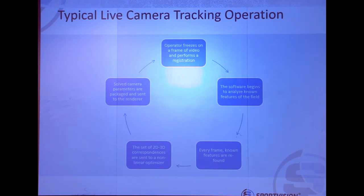The Camera Tracker operation is quite similar to the legacy system, except it operates live. The operator does not have the opportunity to go back and adjust the tracking if it happens to fail. We have very good operators, and it gets down to ultimately muscle memory — being able to realize when things might go wrong and being able to adjust them quickly on the fly so that we rarely lose track.